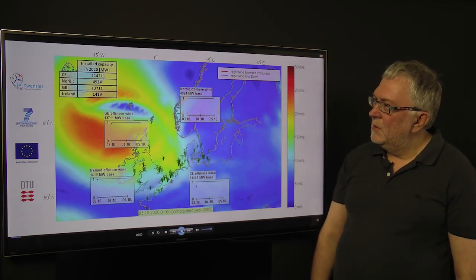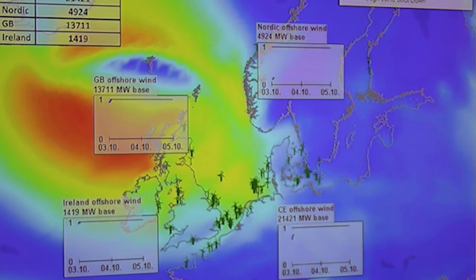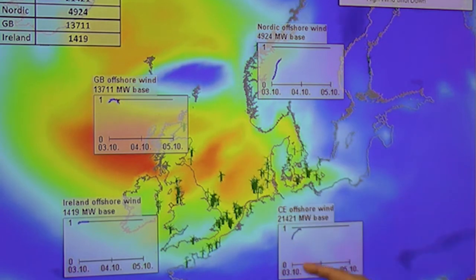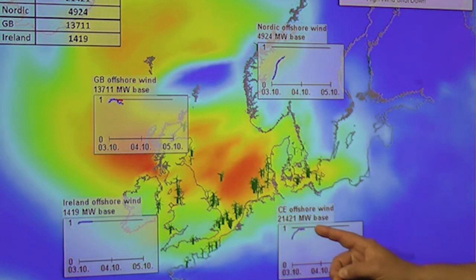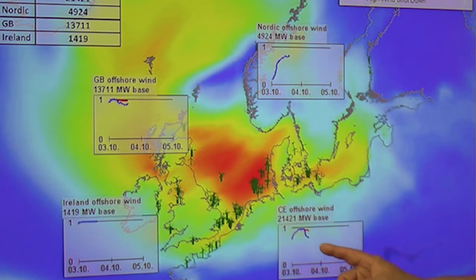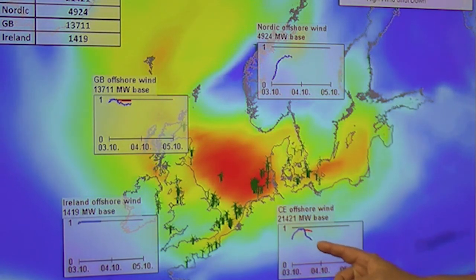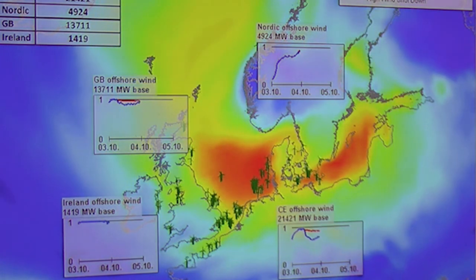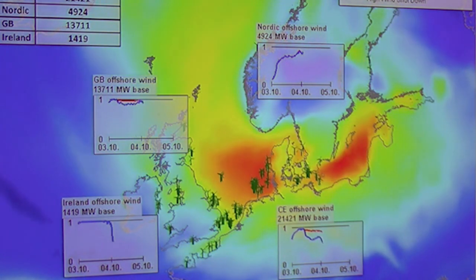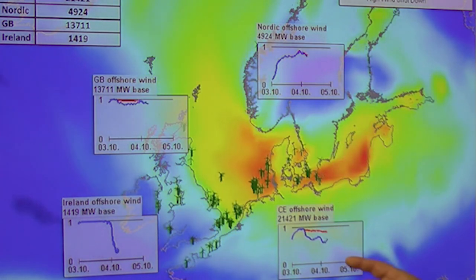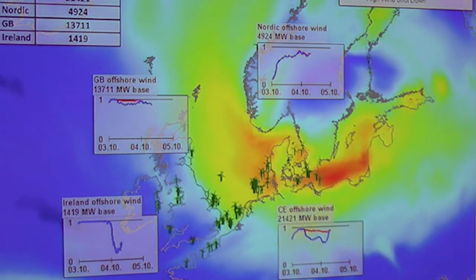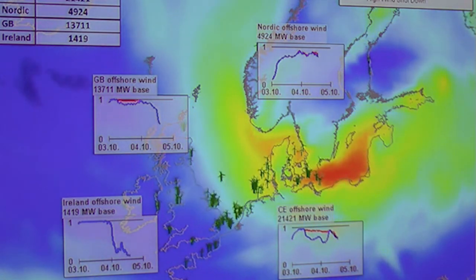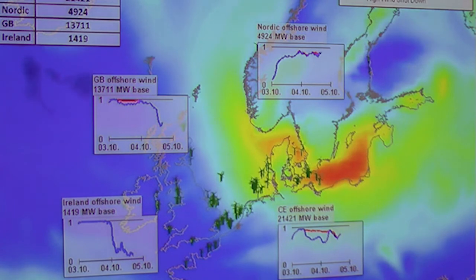So if we now start the animation, we will see how the storm is approaching. And we see in both cases the wind power is increasing. But then we have a sudden drop in the blue case because the storm is passing. But in the red, we also have some reduced power, but not at all as much. And what we see now is that the storm is passing by and then the wind turbines are restarting and continue to produce in a normal way.